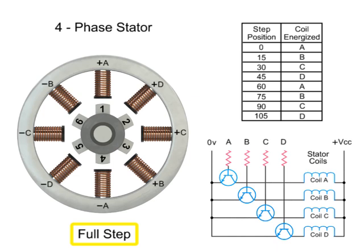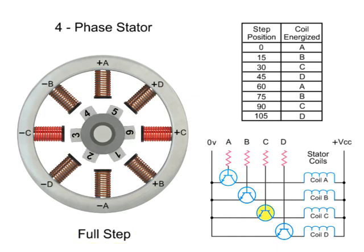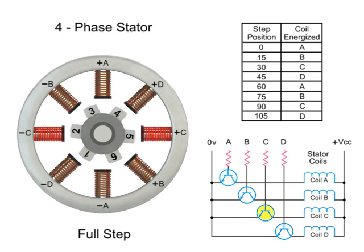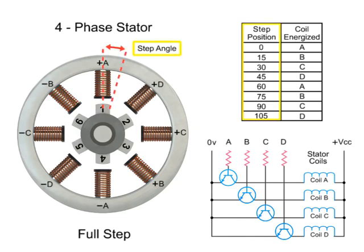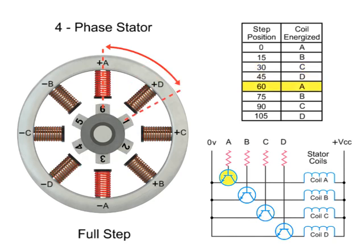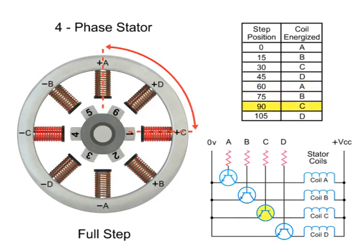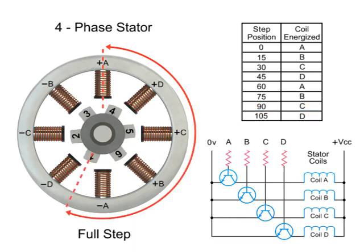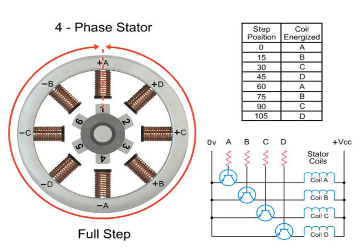For full-step mode operation, energizing each set of coils sequentially, the rotor can be made to rotate or step from one position to the next by an angle determined by its step angle. Shaft rotation is achieved by energizing both windings while reversing the current alternately; switching coils ABCD one coil at a time repetitively will rotate the rotor in the forward direction. In this example, there are six steps arranged on the rotor 60 degrees apart, and 24 steps are required to make a full rotation at 15-degree increments.